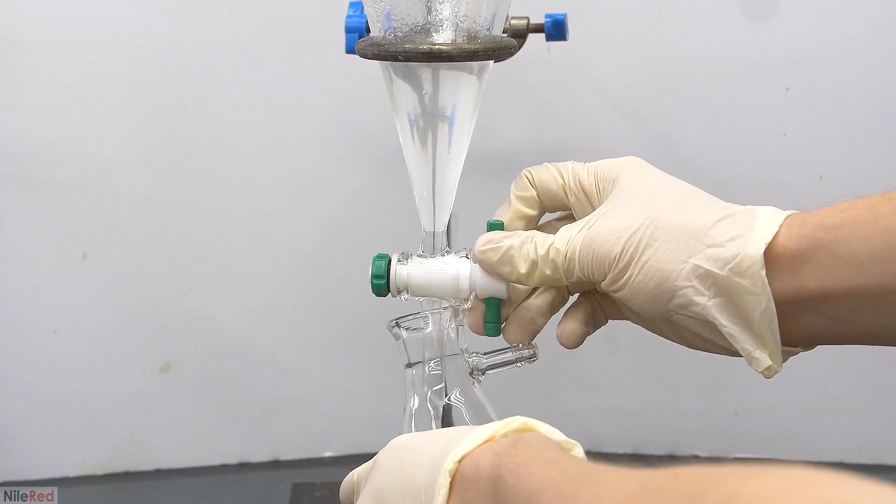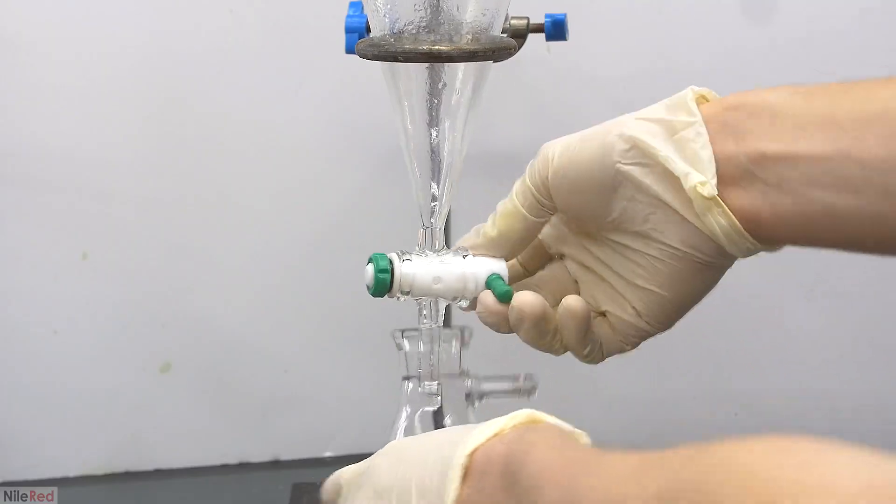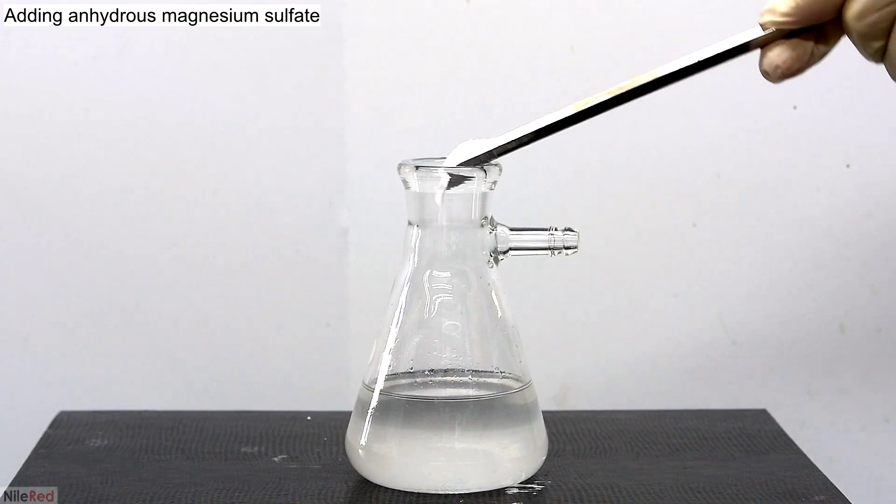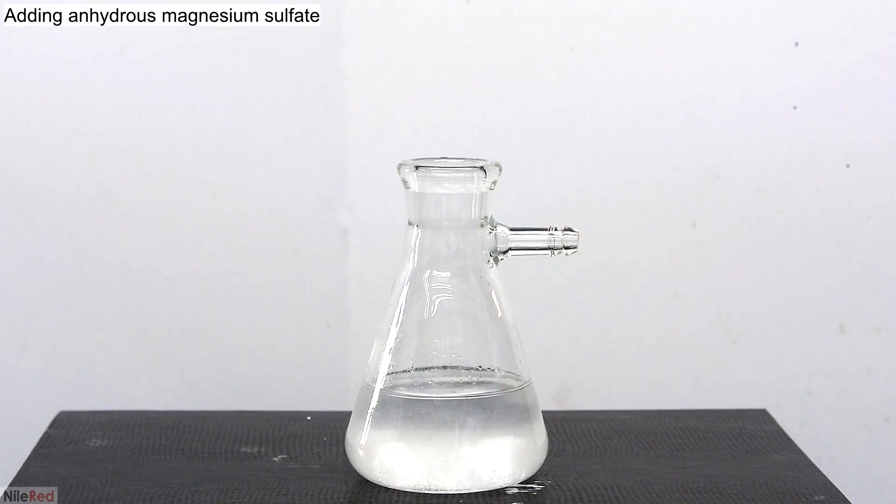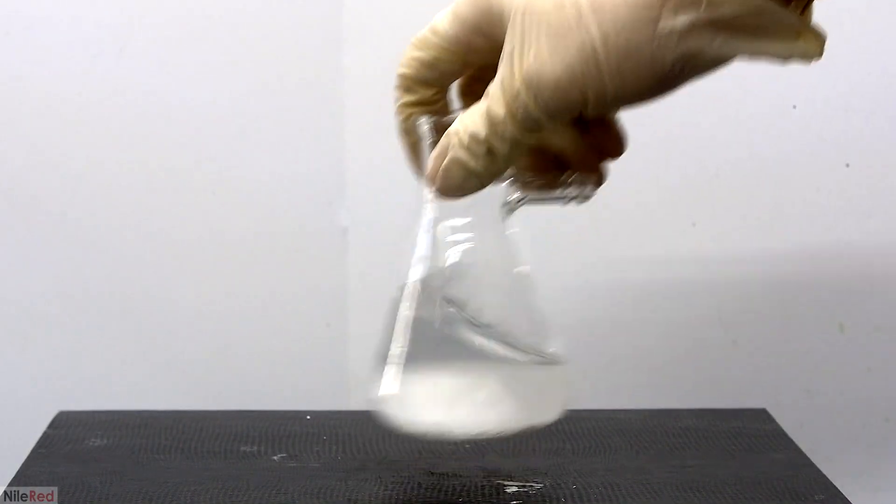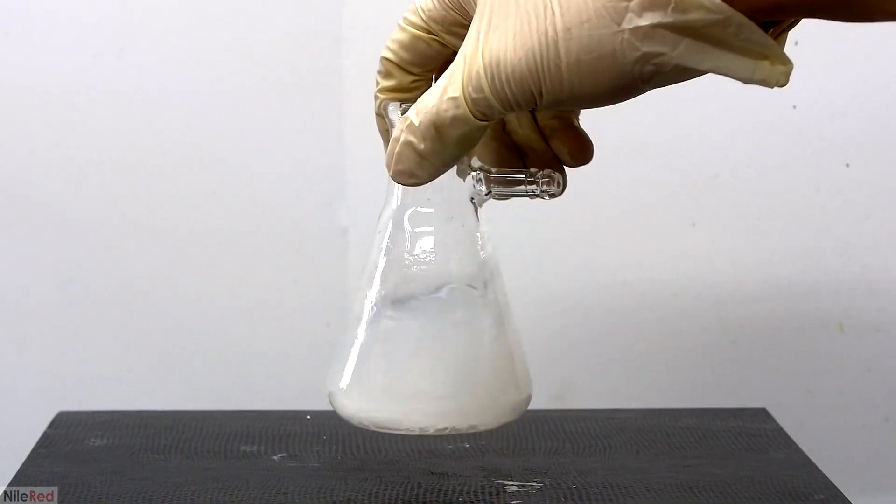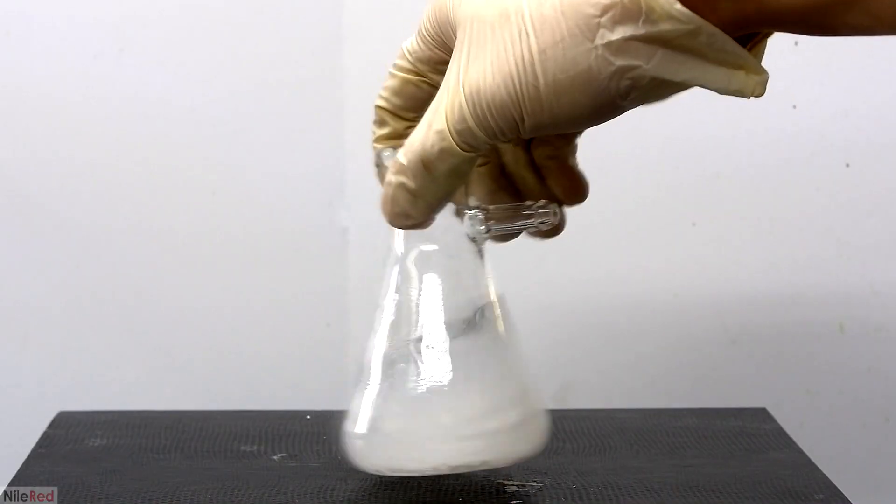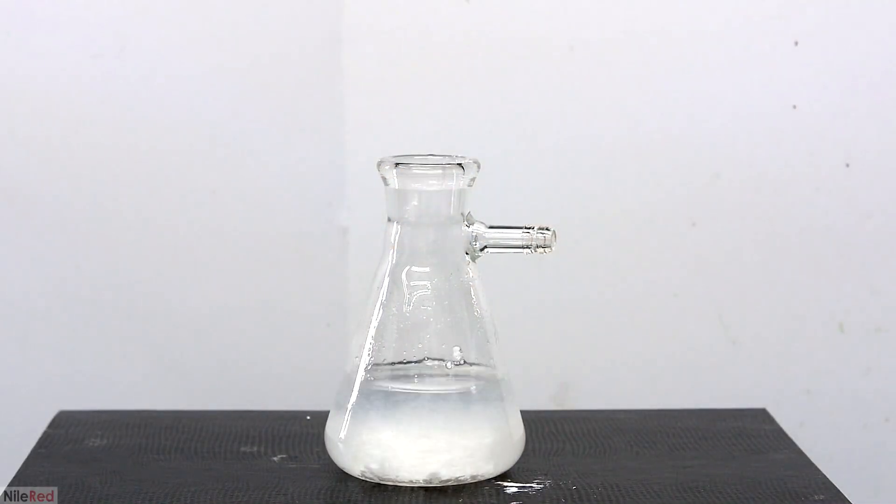The upper benzaldehyde layer is drained into a small Erlenmeyer flask. The benzaldehyde is a little bit cloudy due to the presence of water, so to dry things up, I add some anhydrous magnesium sulfate. The magnesium sulfate will form a complex with the water, and by doing so, it will dry the benzaldehyde.